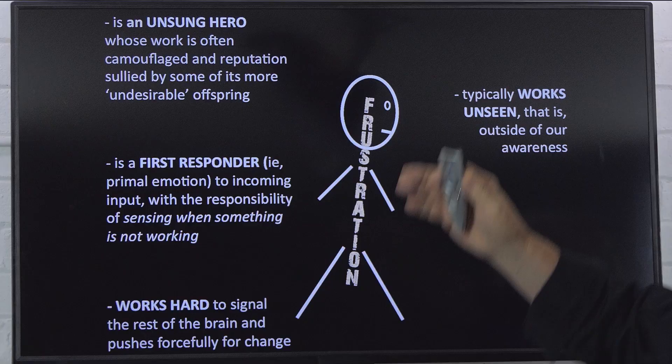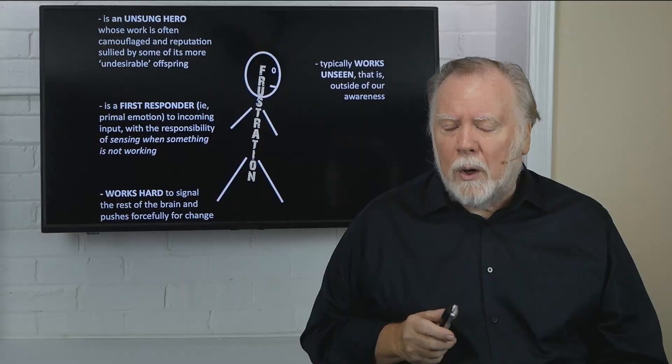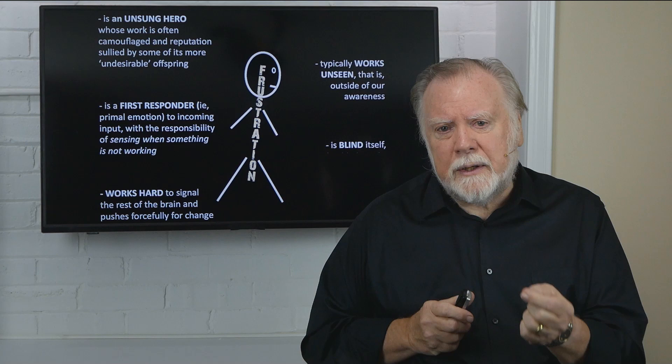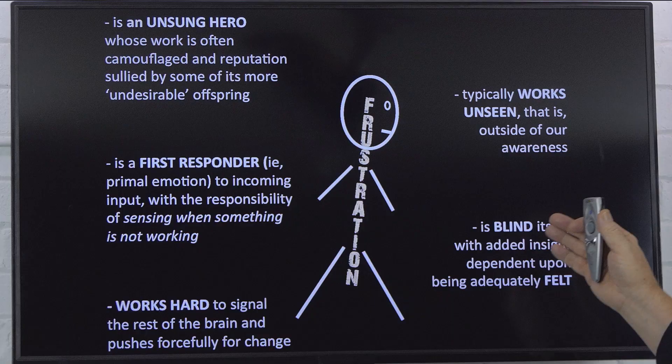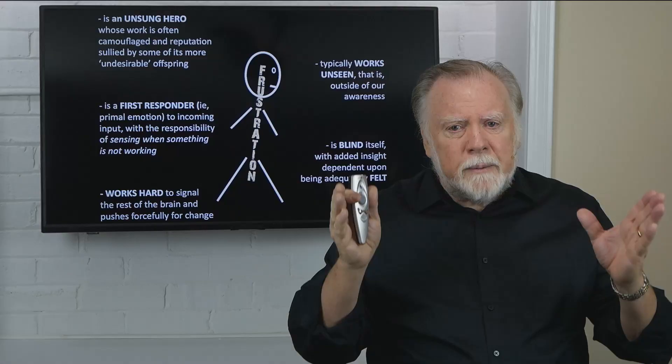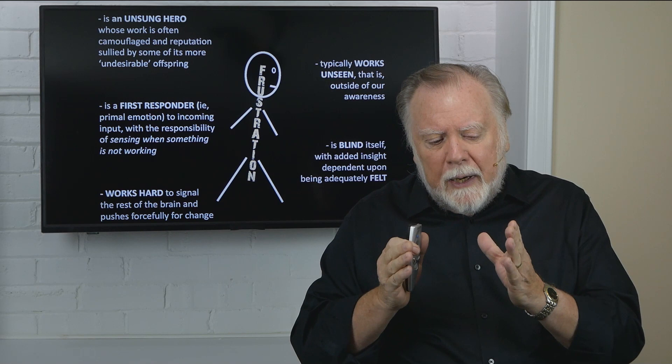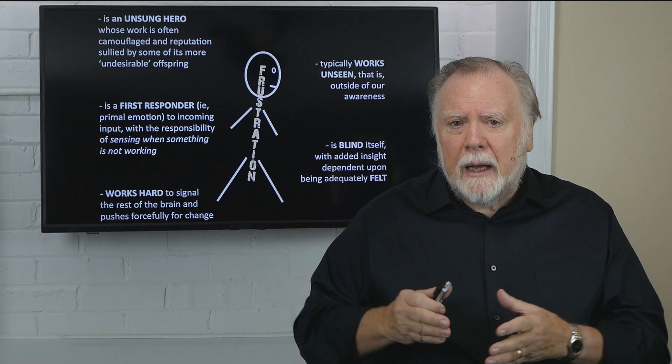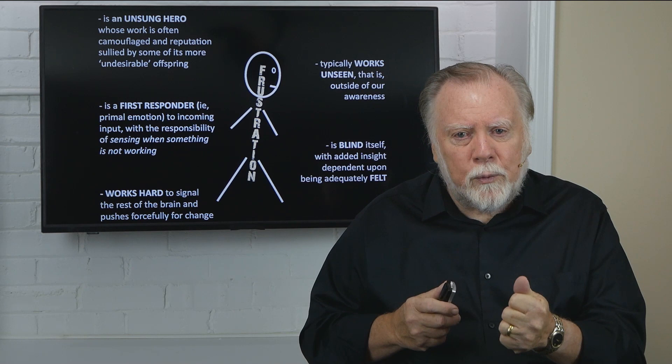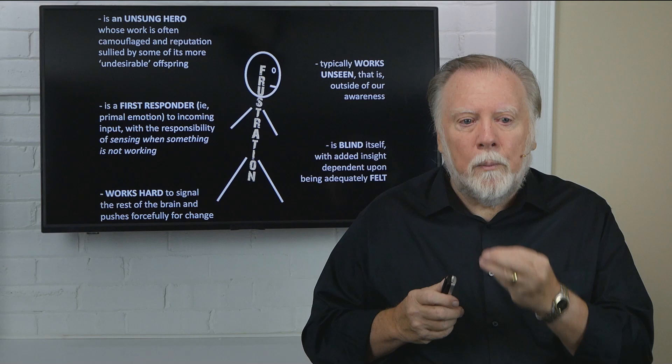It does it powerfully, forcefully, and it does it pretty well unseen—that is, outside of our awareness. We don't even have to be conscious of what it's doing. In fact, most of the time, we're not conscious of it at all. But what is really significant here is that frustration, like all primal emotion, is blind in itself. It's just giving a signal that something is not working. The insight about what isn't working is dependent upon feelings, and so it's blind itself with added insight dependent upon being adequately felt. More on this a bit later.